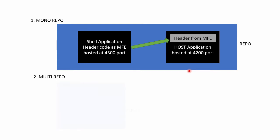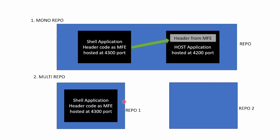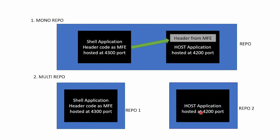In multirepo we will have two different repos, or more than two repos, depending on the structure and the number of shell and host applications. To make it simple, we are having two repos: one is called repo1 and one is called repo2. In repo1 we will have our shell application hosted at port 4300, inside which we have the same header code which is our MFE. This header code will be exposed from the shell application. We are having another repository called repo2 and inside this we are having our host application hosted at port 4200.